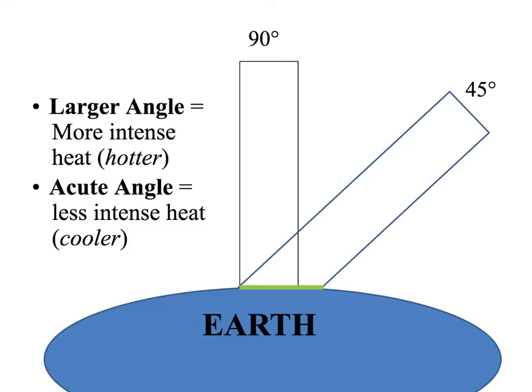First of all, let's try to understand the angle of sunlight — it's very, very important. The greater the angle, up to 90 degrees, the closer we get to 90 degrees, the more direct the sunlight coming down to the Earth, and the hotter it's going to be. A smaller angle means less direct sunlight and less heat.